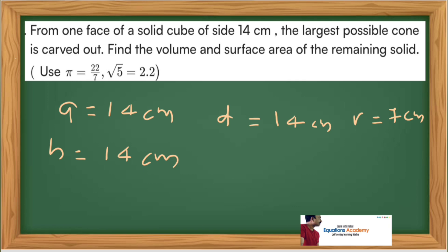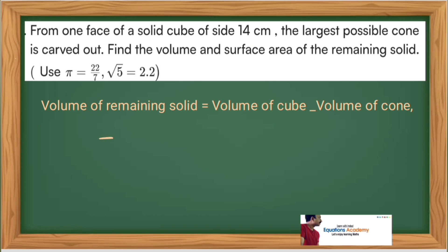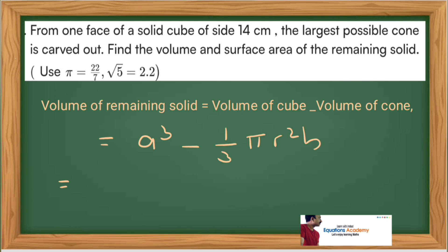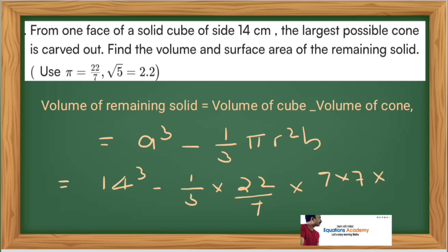Volume of the remaining solid is equal to volume of cube minus volume of cone. Volume of cube is a cubed, minus volume of cone which is one-third pi r squared h. With a equal to 14 centimeters: 14 cubed minus one-third into 22/7 into r squared where r is 7, so r squared is 7 into 7, into h which is 14.